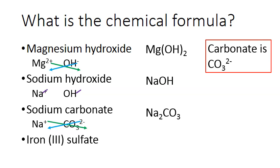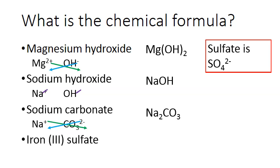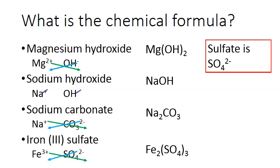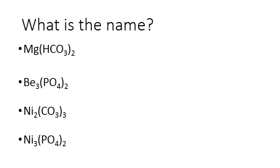Our last example is iron(3) sulfate. Sulfate is SO4 2-, and we know iron's charge is 3+ because it's in the name. So Fe3+ and SO4 2-: we cross the charges and end up with Fe2(SO4)3. Don't forget to put that polyatomic ion in brackets when you add the subscript 3.